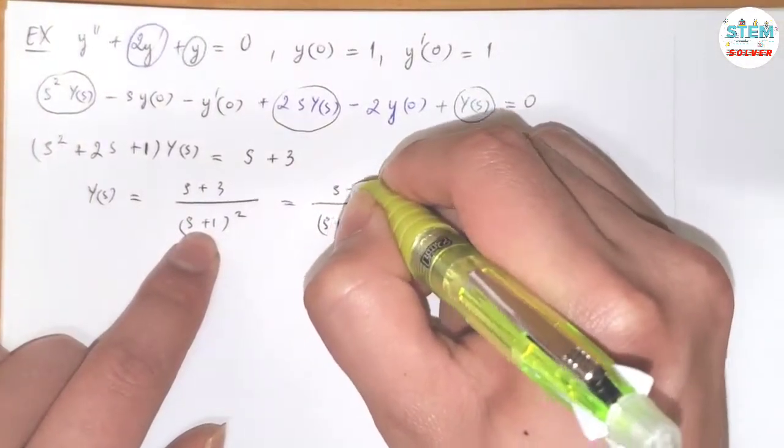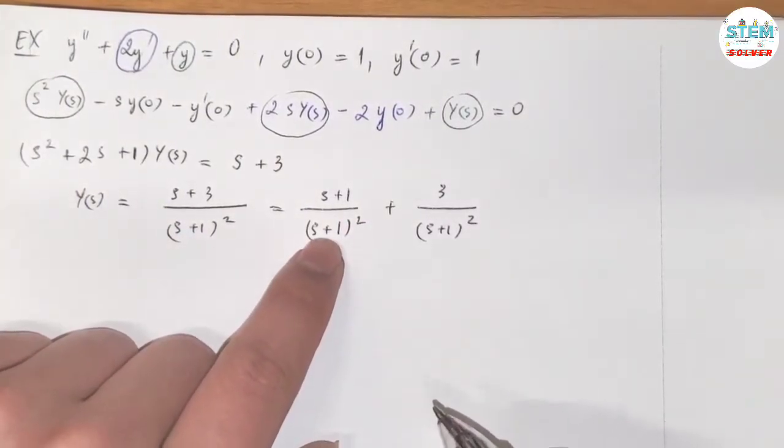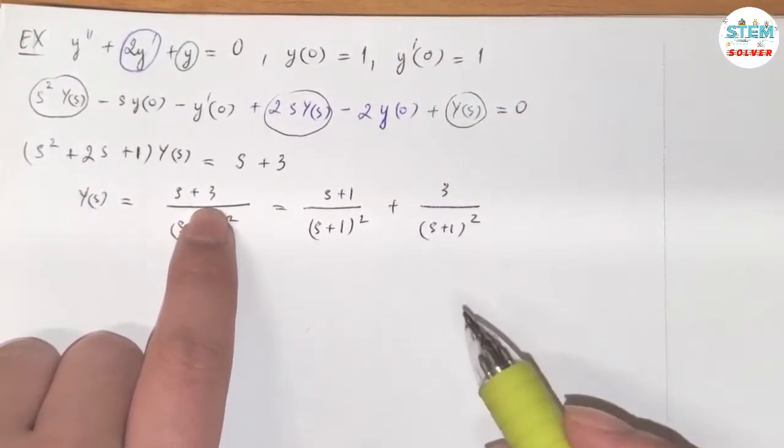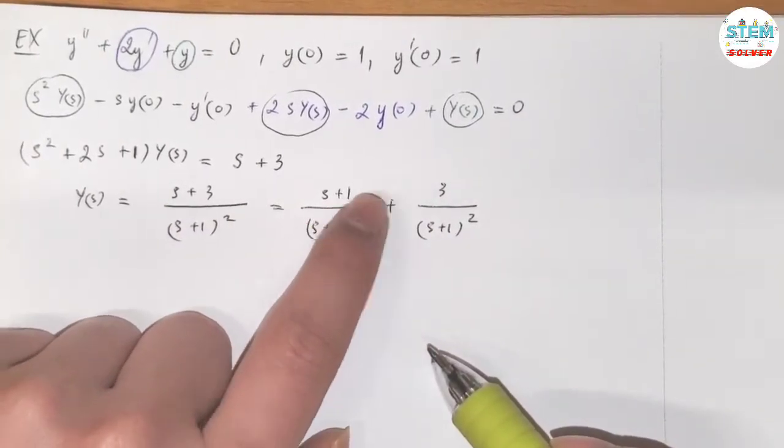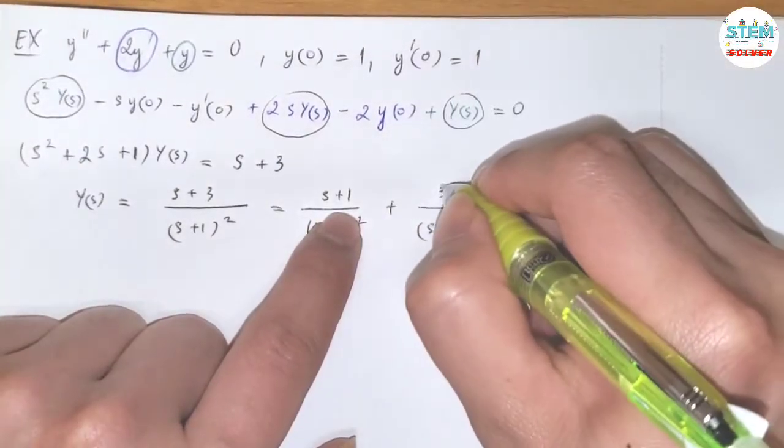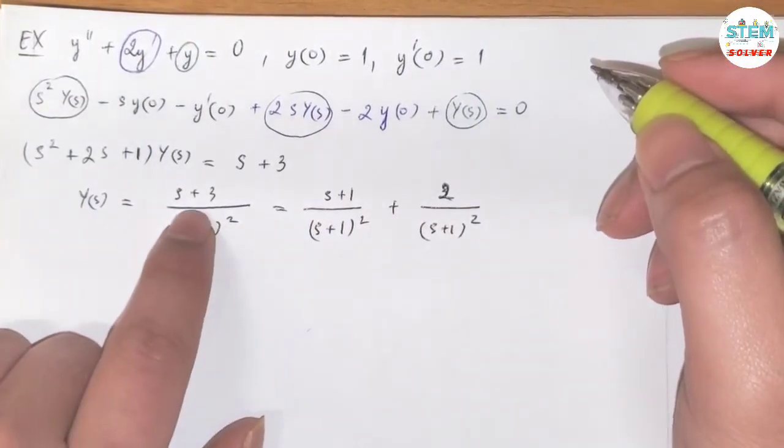But then we have to fix it. So initially, we have s plus 3. Now if I add these up, I have s plus 1 plus 3, which is s plus 4. So on this side, I just have 2. If I combine this together, I have s plus 1 plus 2, which is s plus 3.